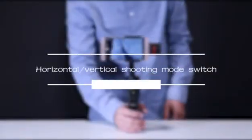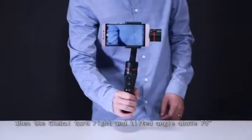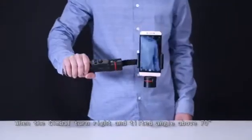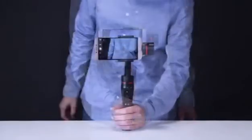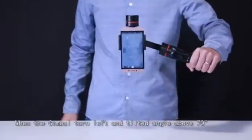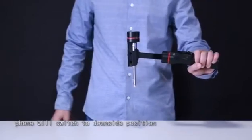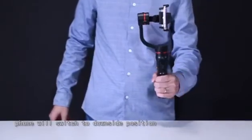Horizontal vertical shooting mode switch. When the Jimbo turns right and tilted angle above 70 degrees, phone will switch to upright position. When the Jimbo turns left and tilted angle above 70 degrees, phone will switch to downside position.